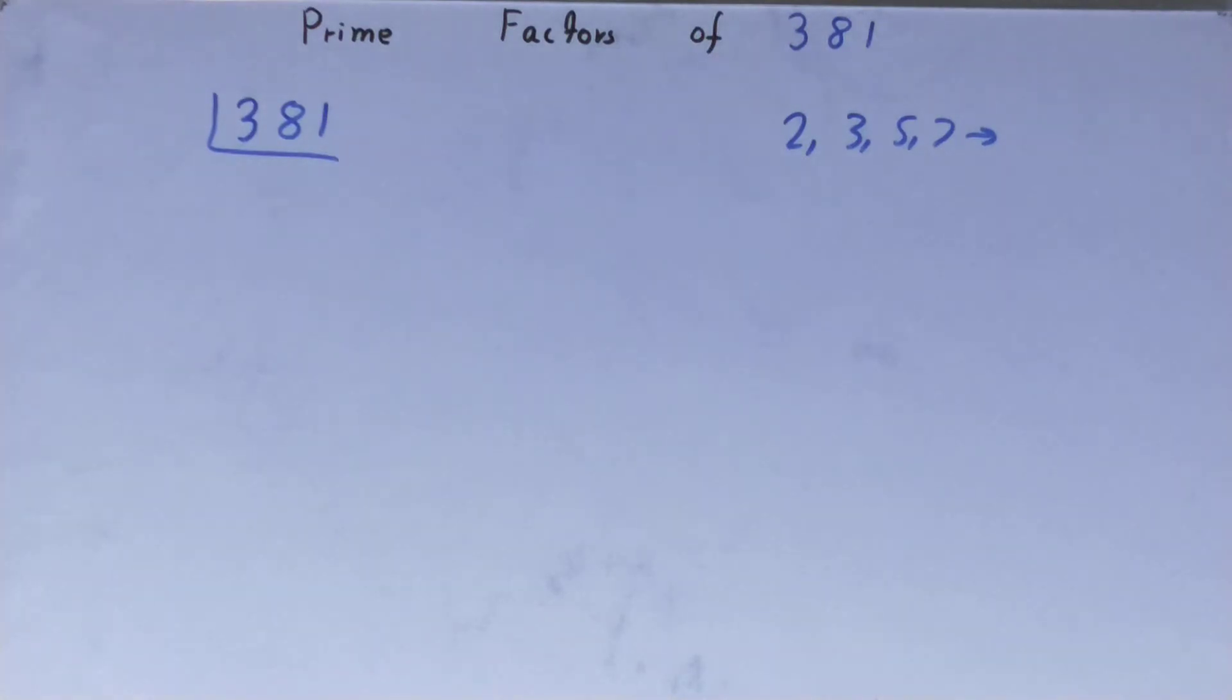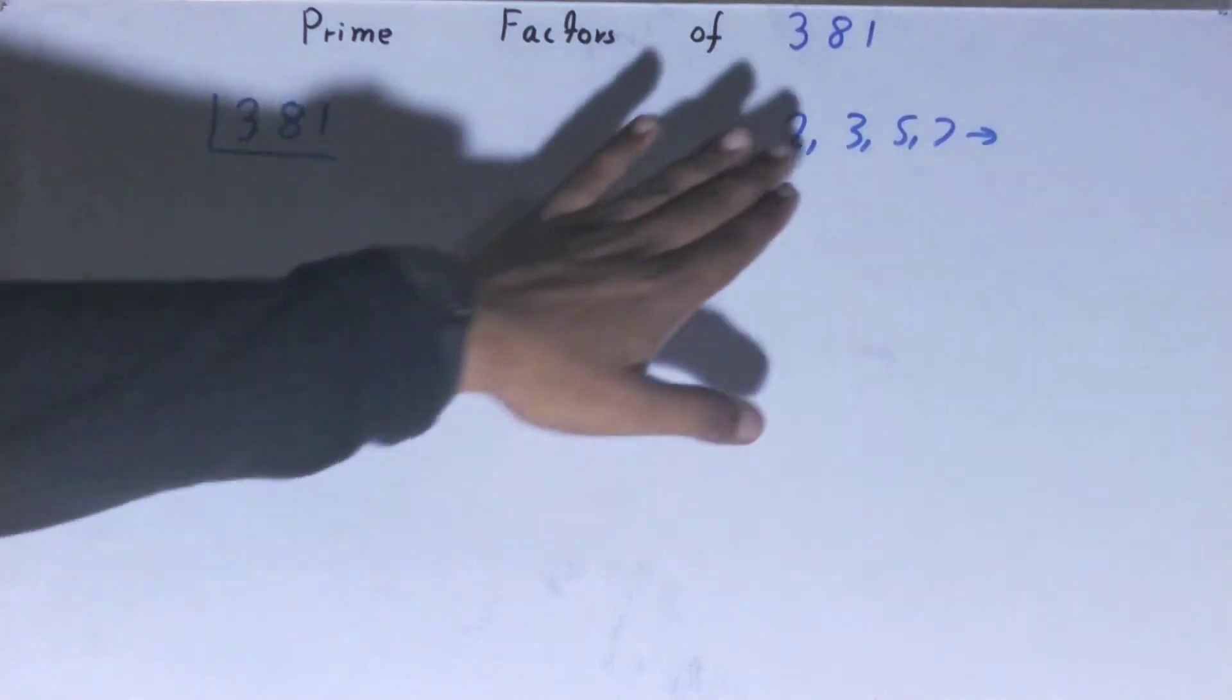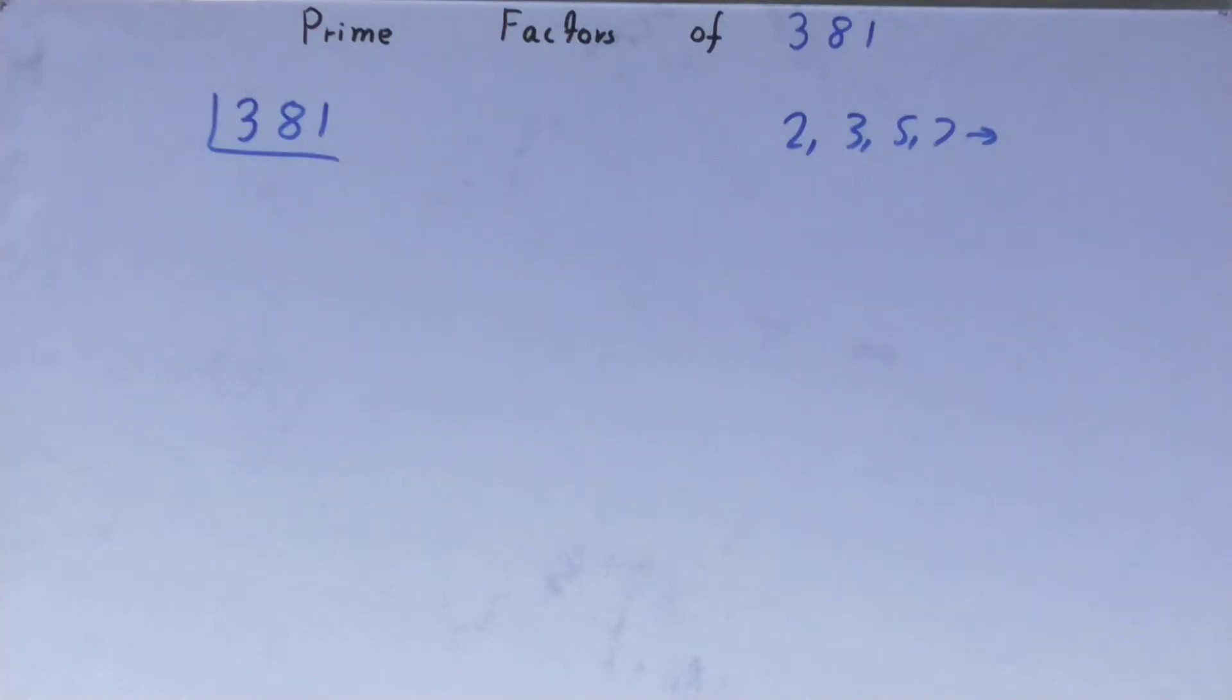We'll start with the lowest prime number we have, that is 2. Is the number 381 divisible by 2? Clearly not, because it is an odd number.